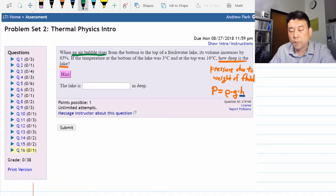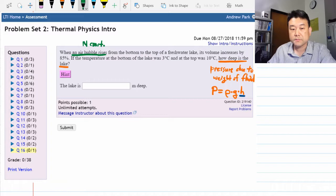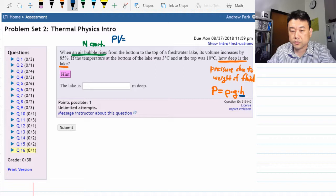I hope that immediately flashes something in your head: that must mean the number of gas particles is constant. And you are still using the same Ideal Gas Law, PV equals NKT.